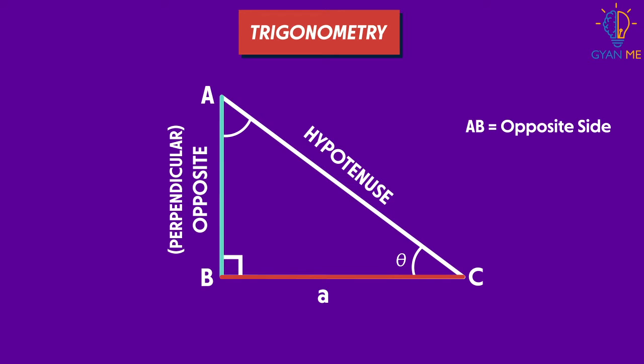On the same lines, the side adjacent to this angle would be adjacent side. Now this side also is a base on which this triangle is resting. So this also becomes base. Thus, the adjacent side is also base for this triangle.